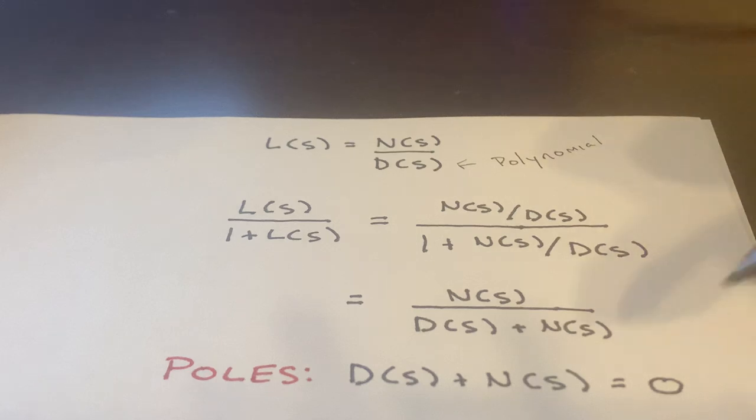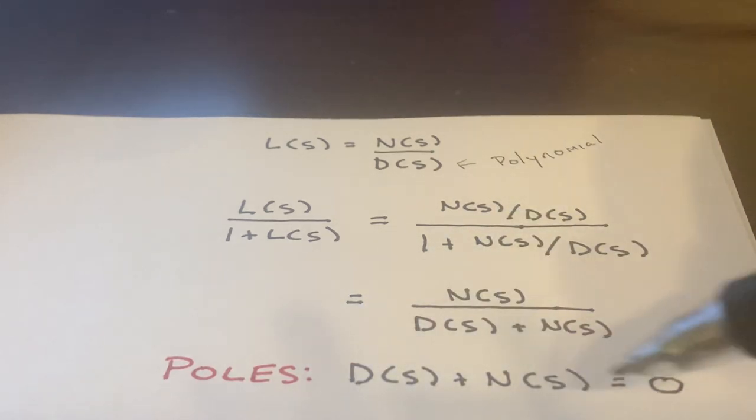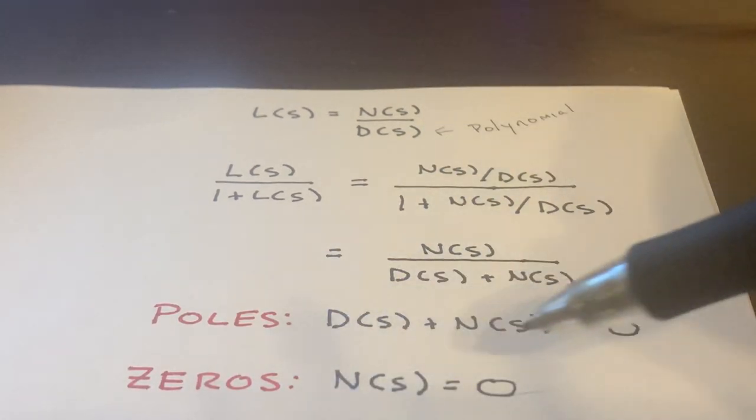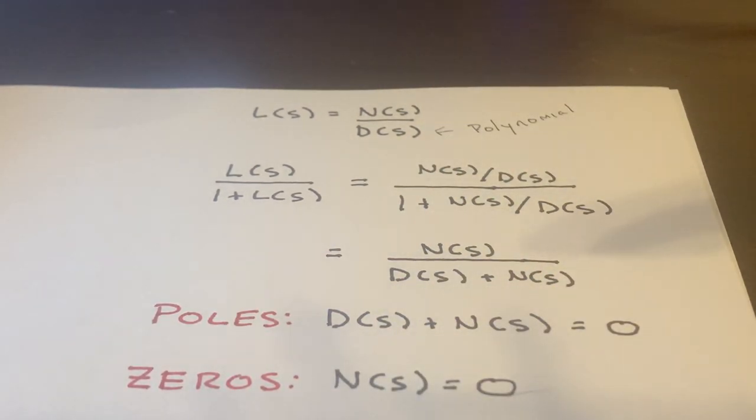And here's what the closed loop transfer function looks like. And so if we want to calculate the poles, basically we're solving for S, D of S plus N of S is equal to zero. And likewise, for the zeros, we're just solving N of S is equal to zero.